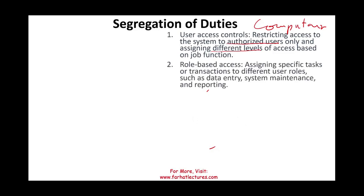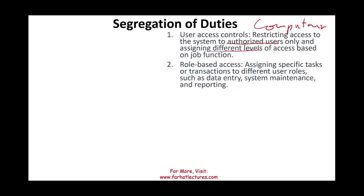Similar to user access control is role-based access — assigning specific tasks or transactions to different user roles such as data entry, system maintenance, and reporting. For example, an AP clerk might only be able to do data entry, or access transactions only below a certain dollar amount. By limiting access in this way, you are effectively segregating what each person can do.